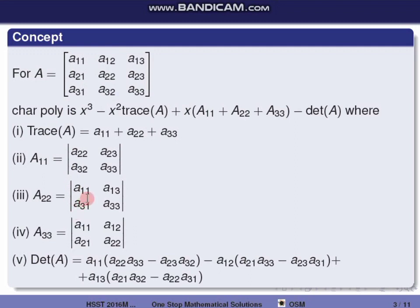A22 is from the second row, second column — eliminate and take the determinant of A11, A13, A31, A33. A33 is from the third row, third column — delete and take the determinant of A11, A12, A21, A22.